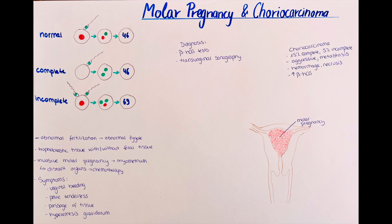The spermatocyte carries the information for the formation of the placenta, so an abnormal placenta forms and eventually fills the uterus. In rare cases, the genetically empty oocyte is fertilized by two different spermatocytes, so no duplication is necessary. However, also in this case, no fetal tissue develops.